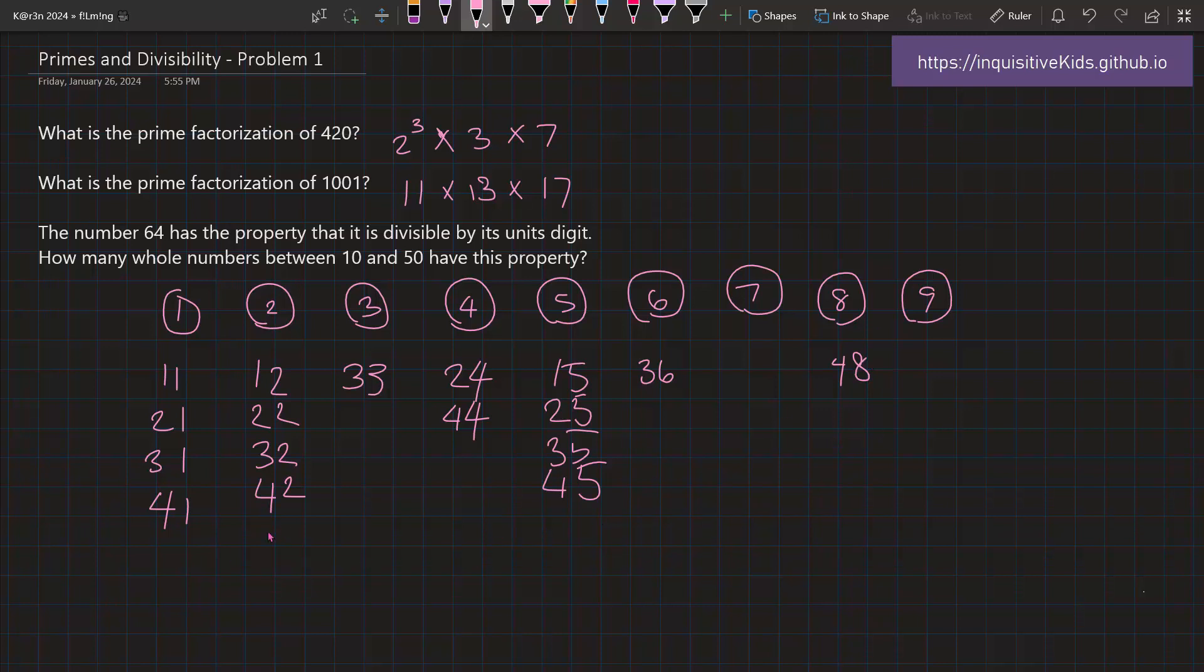So by counting how many total numbers we have written out, it's 4, 8, 12, 16, and then we add one more, which is 17. So the answer to this last problem would be 17 numbers. 17 numbers between 10 and 50 are divisible by their unit's digits.